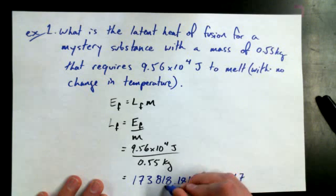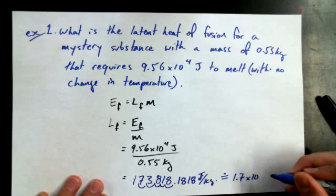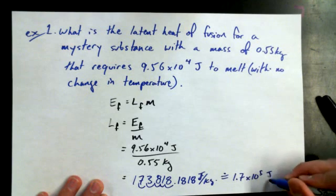1.7, 1, 2, 3, 4, 5 times 10 to the power of 5 joules per kilogram.